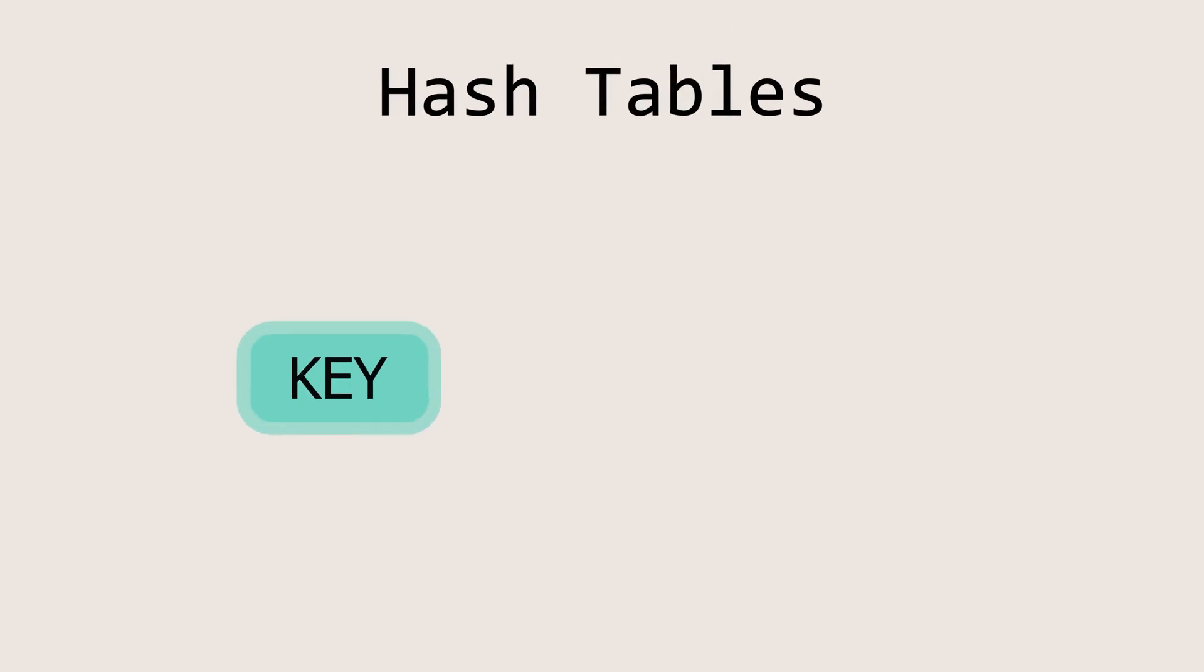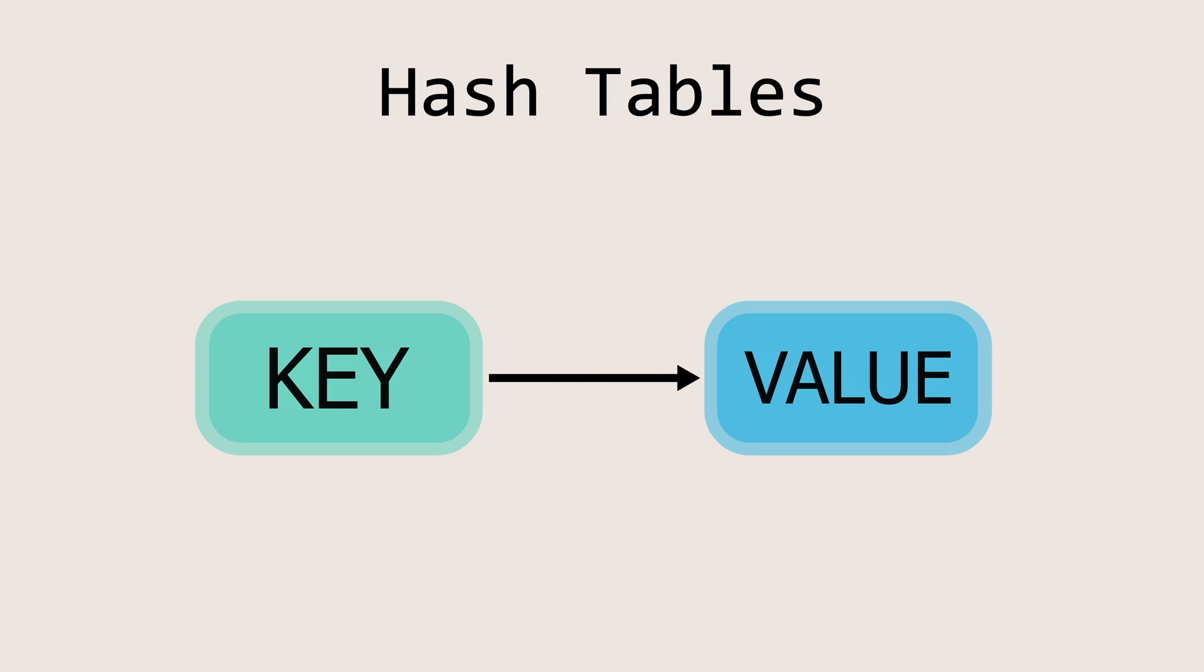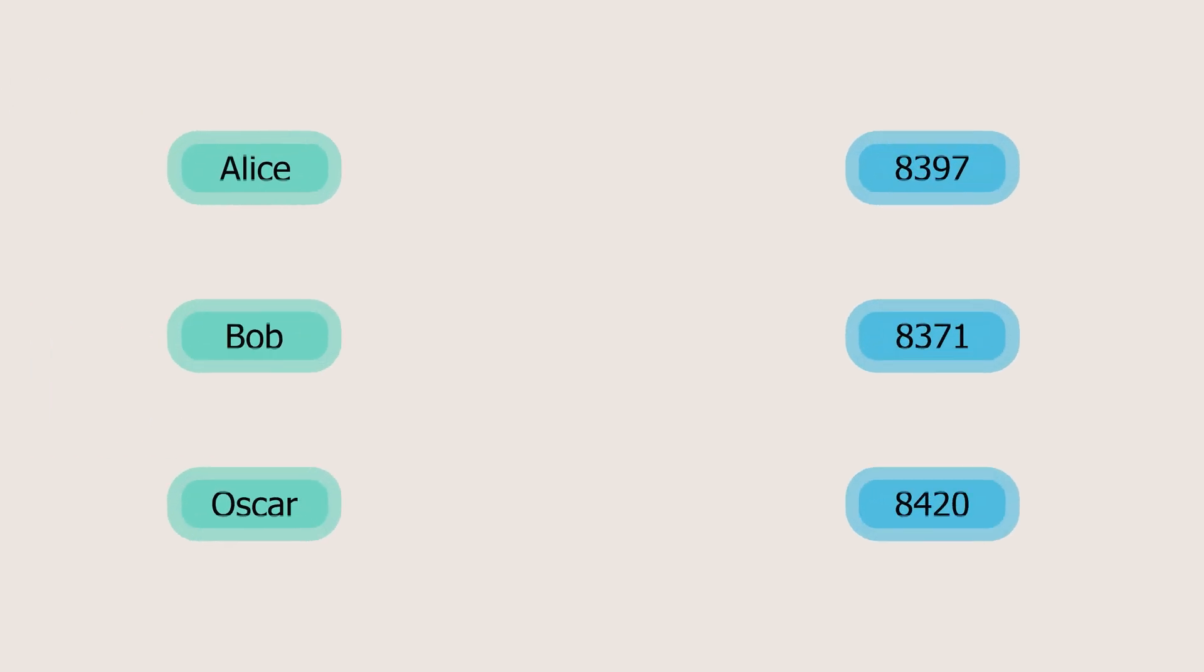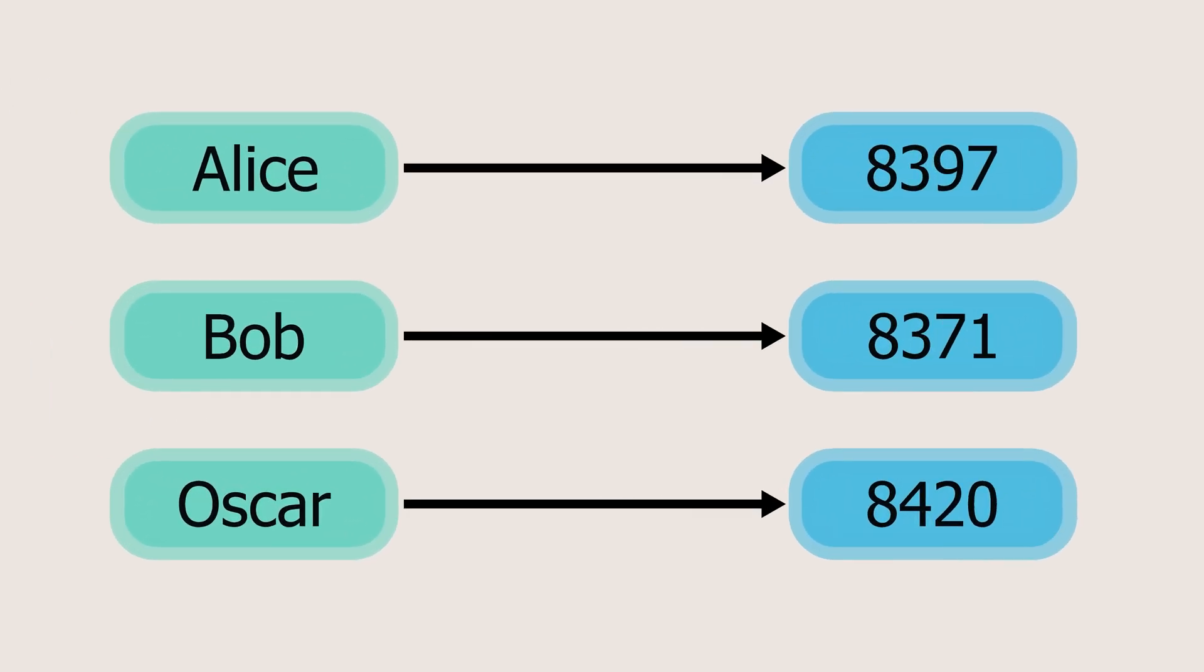A hash table is a data structure that stores elements as key-value pairs, allowing you to use the key to efficiently retrieve information about its corresponding value. Here in this example, we have some keys representing names: Alice, Bob, and Oscar, and their corresponding university IDs as their values.